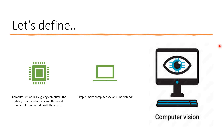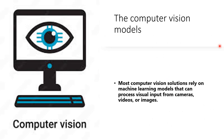Computer vision by definition is like giving computers the ability to see and to understand the world, much like you and I do. It is a simple thing where computers can see and understand. Most computer vision solutions certainly rely on machine learning models that process the inputs from cameras, videos, or images.